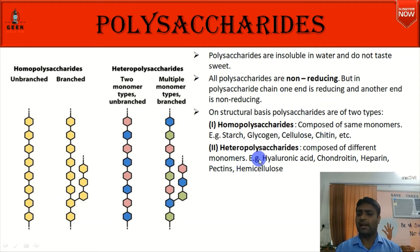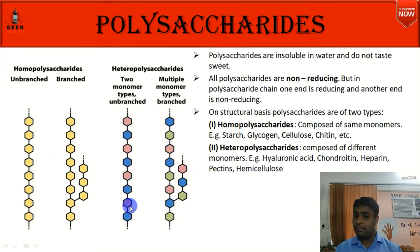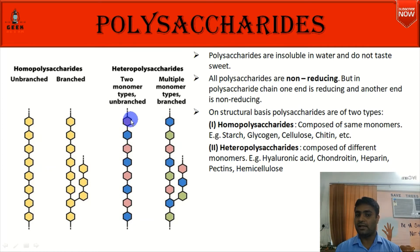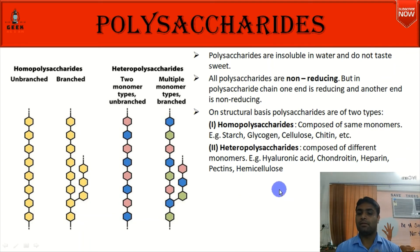Heteropolysaccharides contain more than one type of monosaccharide unit. Examples include hyaluronic acid, chondroitin, heparin, pectin, and hemicellulose.